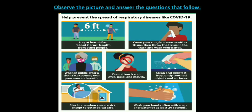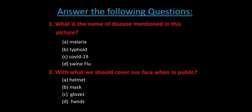We will do practice with one more picture. Before showing it, I will read the questions first. Question 1: What is the name of the disease mentioned in this picture? Options: 1. Malaria, 2. Typhoid, 3. COVID-19, 4. Swine flu. Question 2: With what should we cover our face when in public? Options: 1. Helmet, 2. Mask, 3. Gloves, 4. Hands. Keep on writing, students.